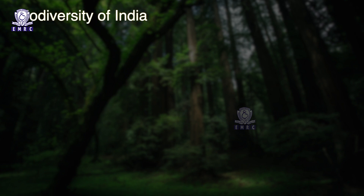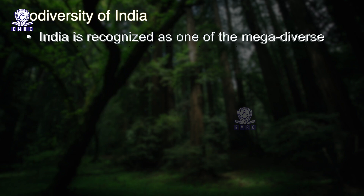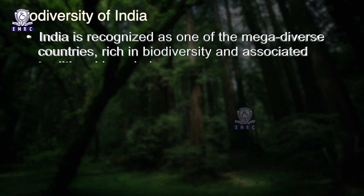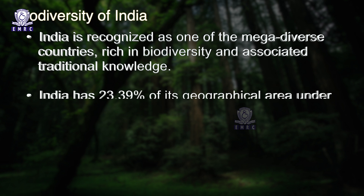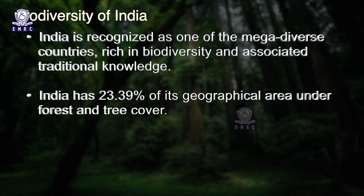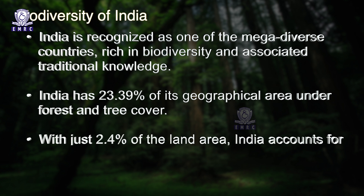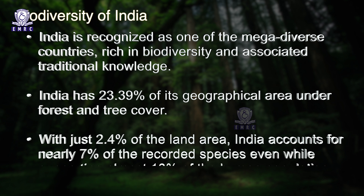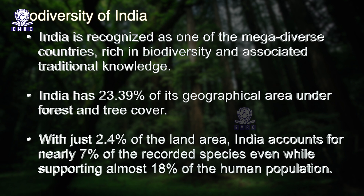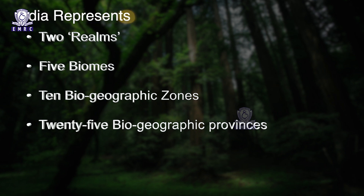India is recognized as one of the mega-diverse countries, rich in biodiversity and associated traditional knowledge. India has 23.39% of its geographical area under forest and tree cover. With just 2.4% of the land area, India accounts for nearly 7% of the recorded species, even while supporting almost 18% of the human population. In terms of species richness, India ranks 7th in mammals, 9th in birds, and 5th in reptiles. India represents 2 realms, 5 biomes, 10 biogeographic zones, and 25 biogeographic provinces.